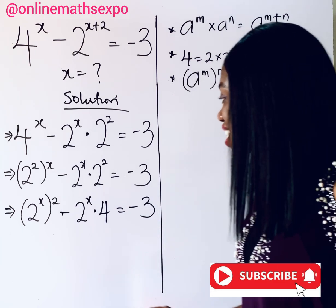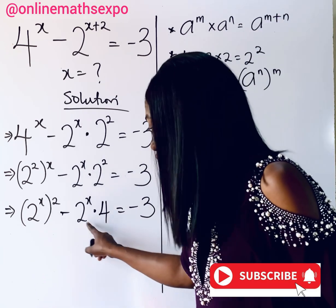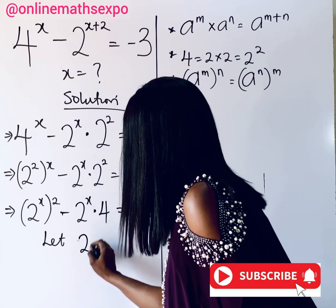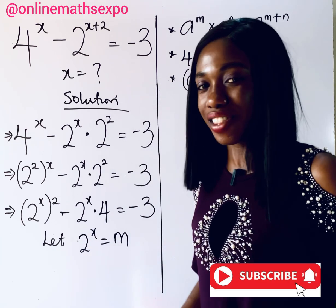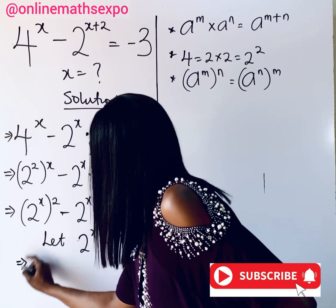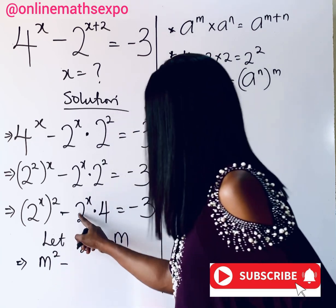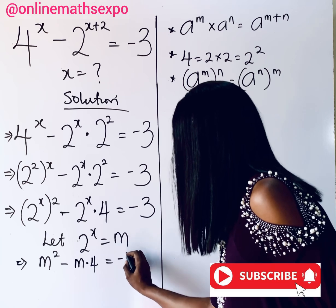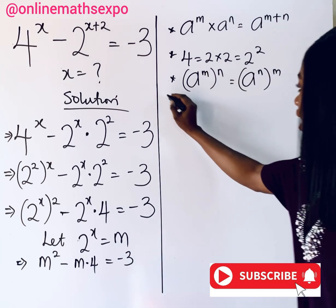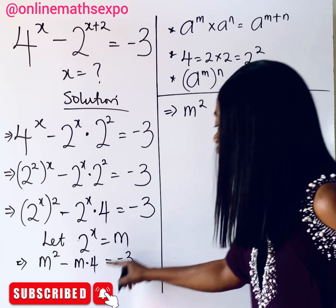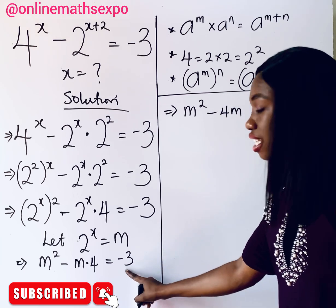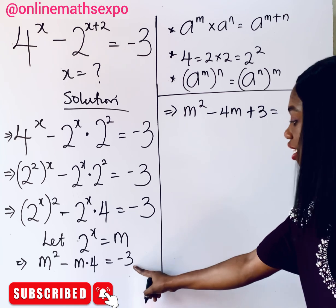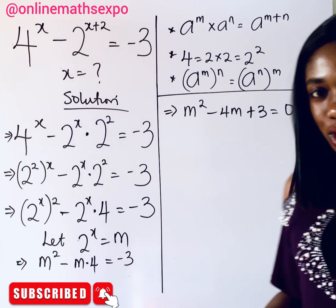Notice that 2 to the power of x is appearing as a common term, so we can replace it. At this point, you can use any variable — let's say 2 to the power of x equals m. So choosing m, this becomes m squared minus m multiplied by 4 equals negative 3. Simplifying, we have m squared minus 4m, and adding 3 to both sides gives us m squared minus 4m plus 3 equals 0. We have formed a quadratic equation.